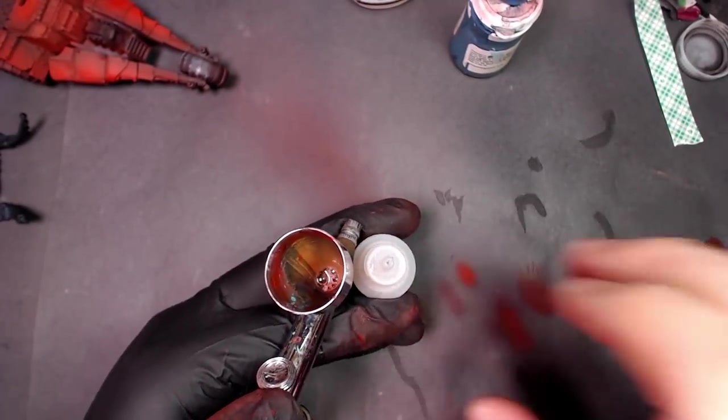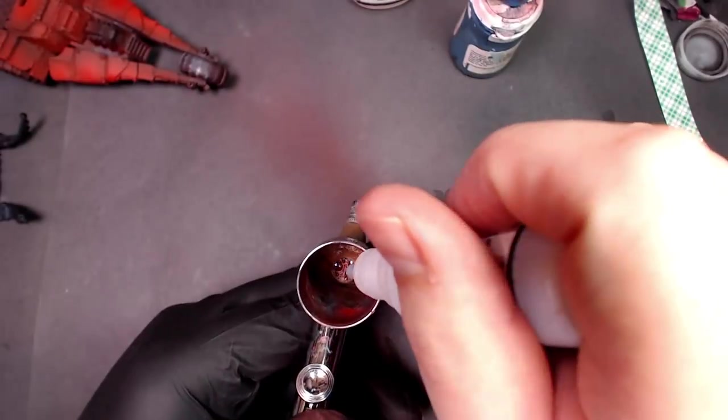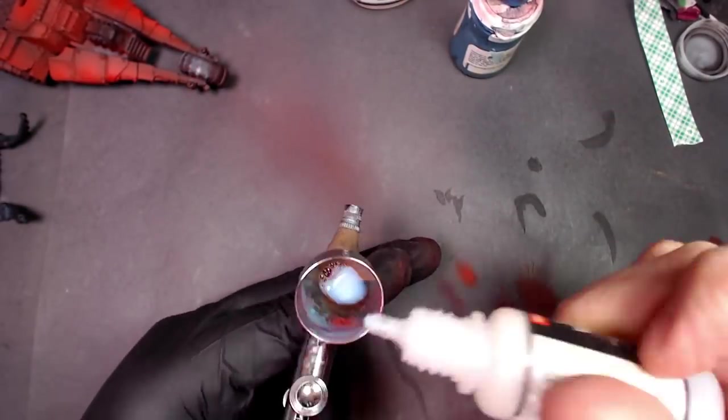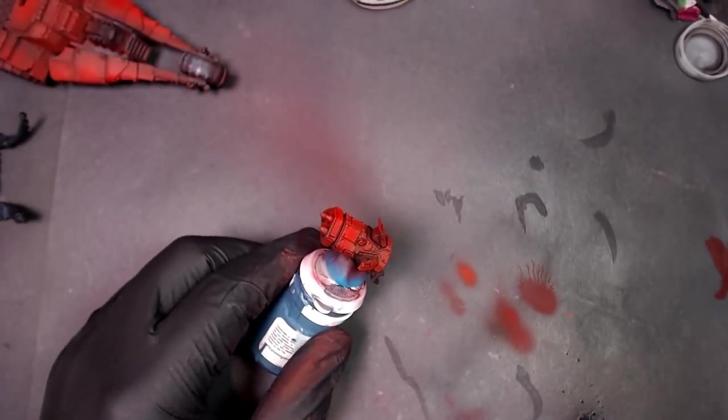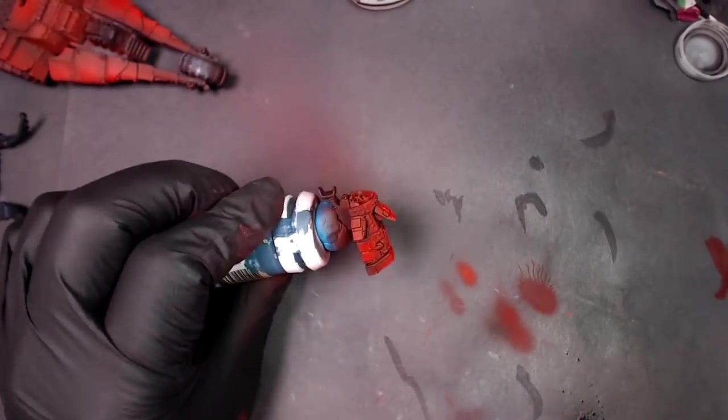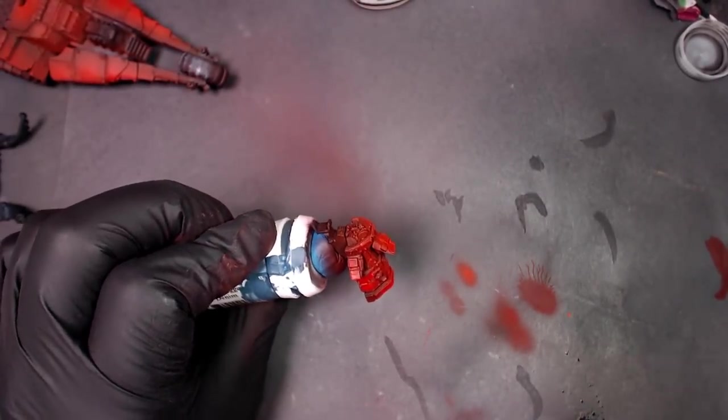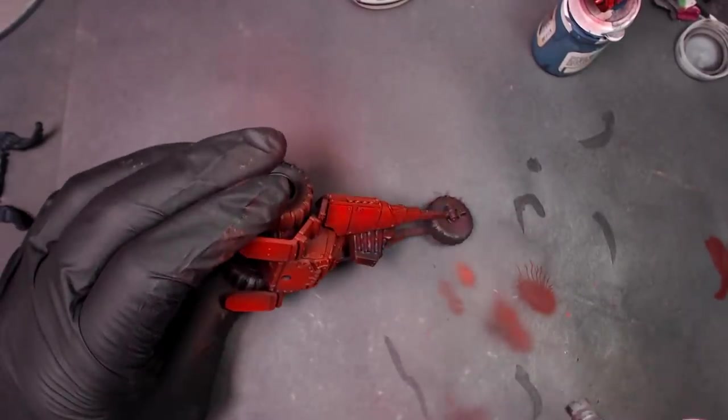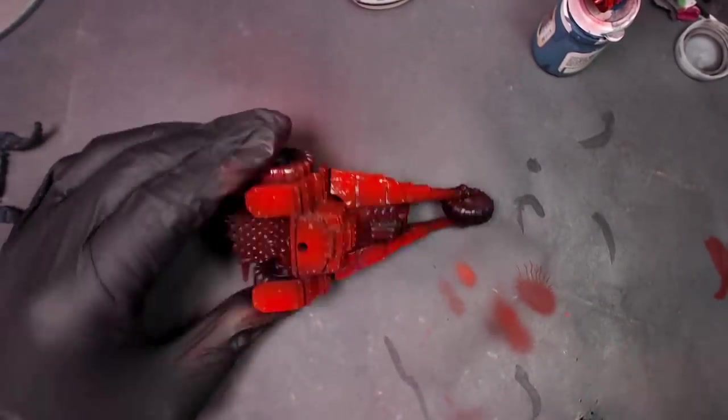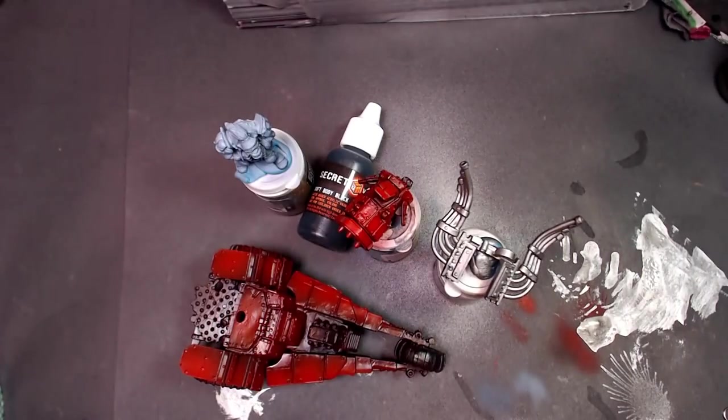So we're going to throw a little thinner in the airbrush pot. A little bit of that gloss varnish. Vallejo is the one I like to use. And we're going to quickly gloss all this stuff up. There's a reason that we're gloss varnishing it. Alright. Gloss varnish makes the surface very shiny. Very slippery. Kind of like glass.